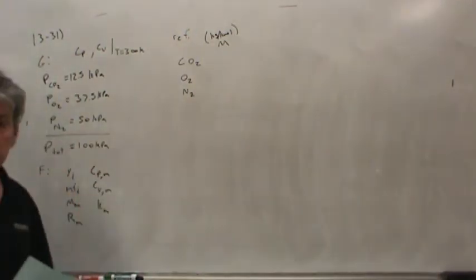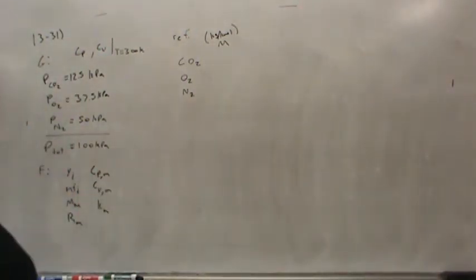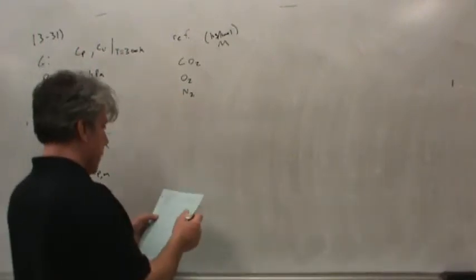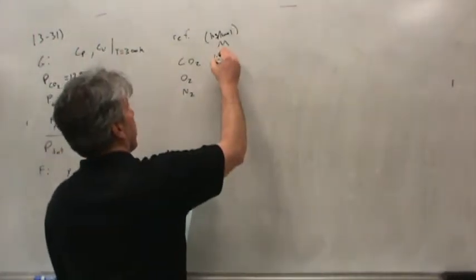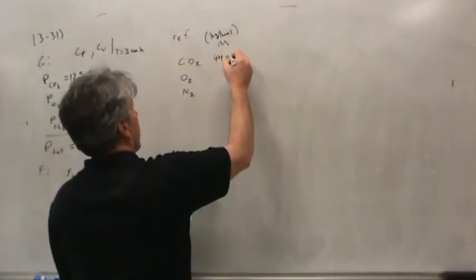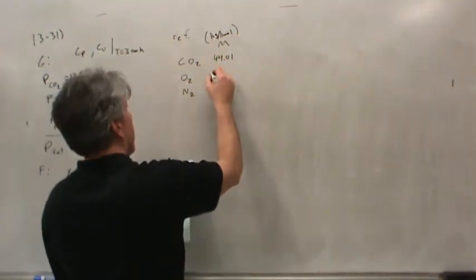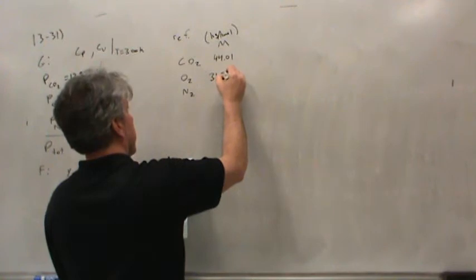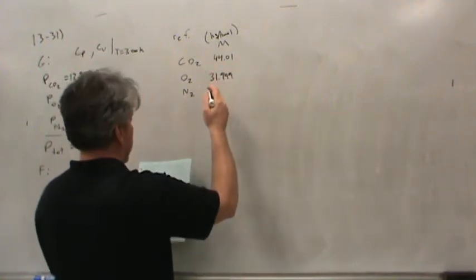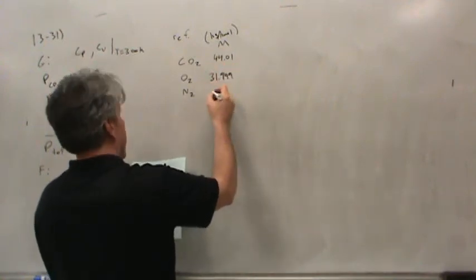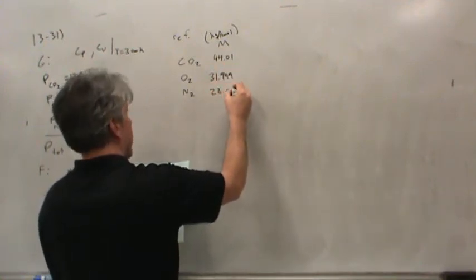Numerically it's the same as pound-mass per pound-mole. From the first page of the appendix, you'll find all of these numbers: 44.01 kg/kmol for carbon dioxide, 31.999 for oxygen (roughly 32), and 28.013 for nitrogen.